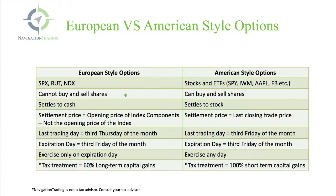With the European style options, you cannot buy or sell shares. These are simply the indexes. You can trade options on the index, but you can't buy and sell the actual shares. With stocks and ETFs, you can actually buy and sell the shares and trade them as a normal stock.